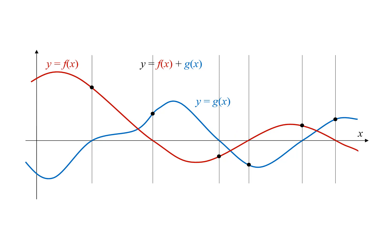Now for some other points. At this value of x, the height of f of x is represented by this vertical red line segment. We want to add this to g of x, so we start at g of x and go up by this amount. That gets us to the value of the sum, f of x plus g of x. So we have a point on our graph.